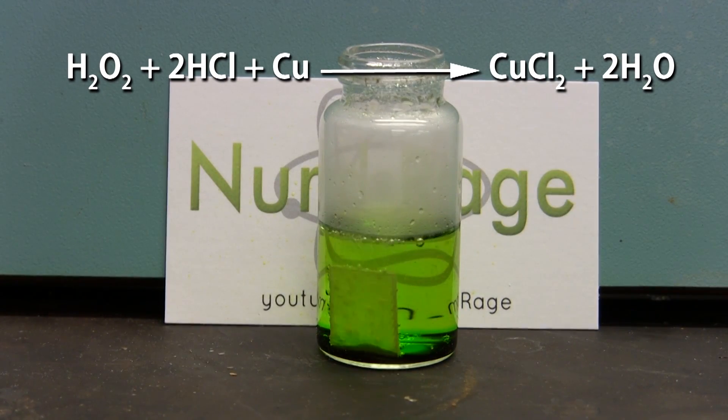A disadvantage of this etchant is that it decays and unused etchant loses strength in storage. But a great thing about this etchant is that it makes useful copper chloride that can be used as another type of etchant that I'll detail later on in the video.